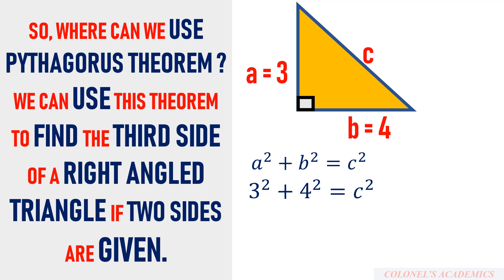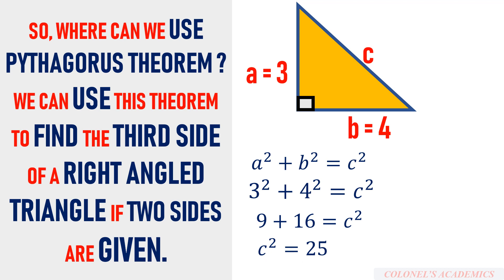Three squared is 9 and four squared is 16, so 9 plus 16 is 25. Therefore c squared equals 25, and c equals 5, which is the square root of 25. Here you can see that if you know two sides you can find the third side.